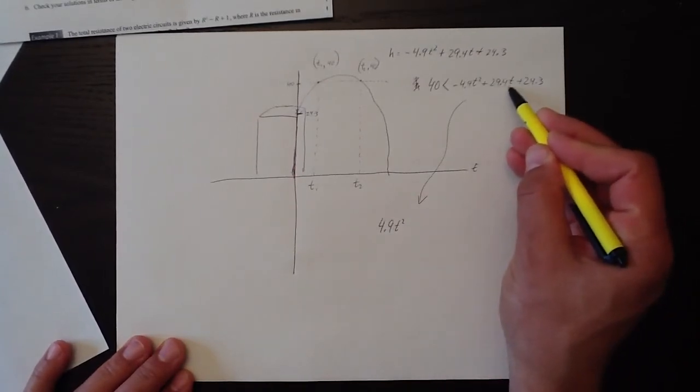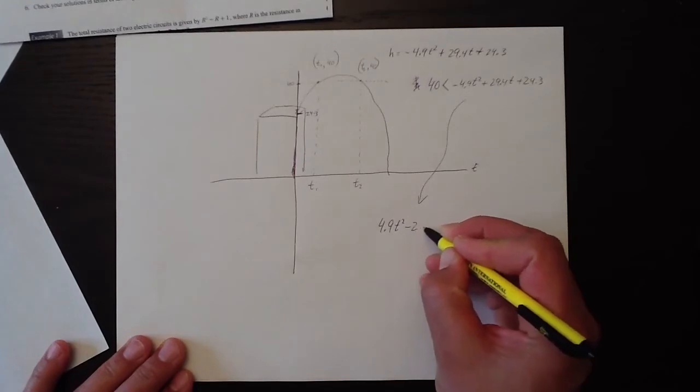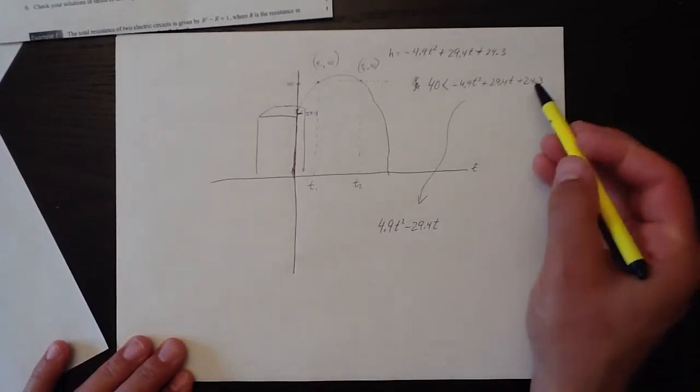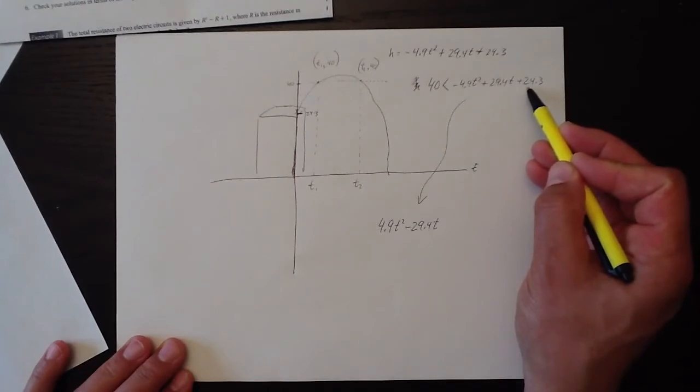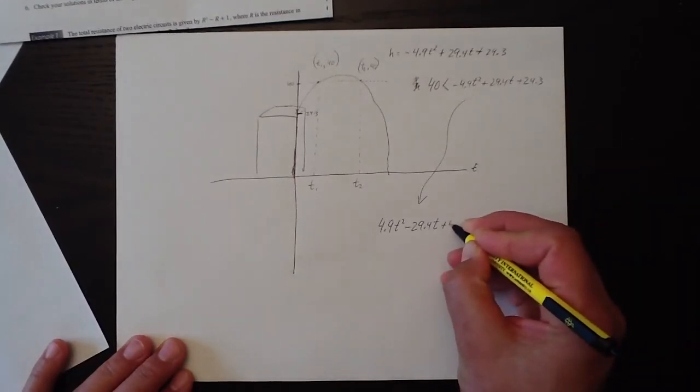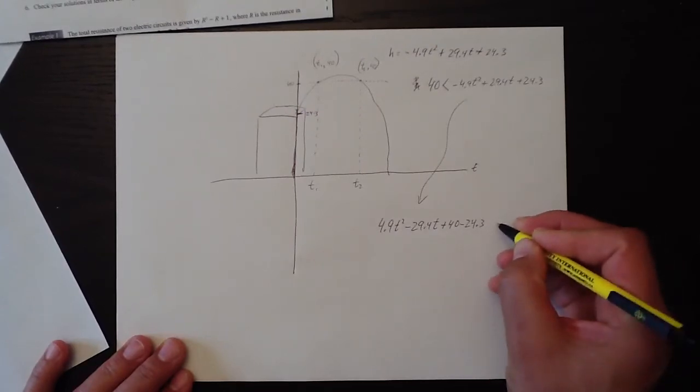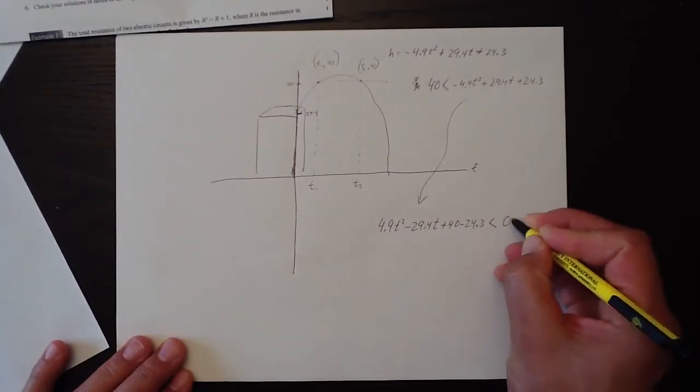We're going to subtract this stuff from both sides, so minus 29.4 t. And we're going to subtract 24.3 from both sides. So we had the 40 originally and minus the 24.3. And that's all going to be less than 0.